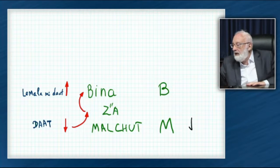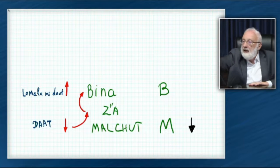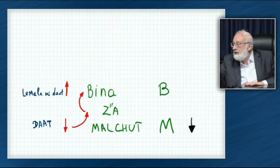So, here, inside the malchut, you have the quality of reception. In the bina, you have the quality of bestowal.